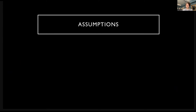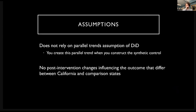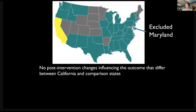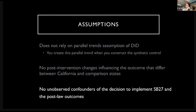Some assumptions in this model: it doesn't rely on the parallel trends assumption of difference-in-differences — you're effectively building that yourself. But we have to assume there are no post-intervention changes influencing the outcome that differ between California and the comparison states. For example, we had to exclude Maryland from our sample because they instituted a similar law in 2019. We're also assuming no unobserved confounders of the decision to implement SB 27 and the post-law outcomes — for instance, if everyone in California suddenly became very worried about antibiotic resistance, or if there were hospital-level policy changes related to antibiotics.